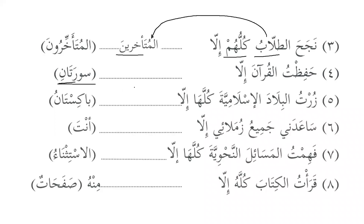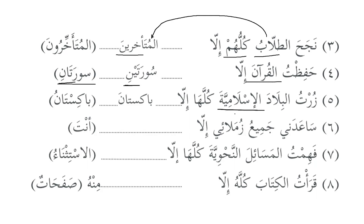'Hafidtul qur'ana illa suratayni' — I memorized the whole Quran except for the two surahs. The surahs are part of the Quran, so it is tamun and mujabun. 'Zurtul bilad al-islamiyya kullaha illa pakistana' — I visited all the Islamic countries except for Pakistan. Pakistan is an Islamic country and is part of all Islamic countries — so all three conditions have been met and al-mustathna is mansoob.